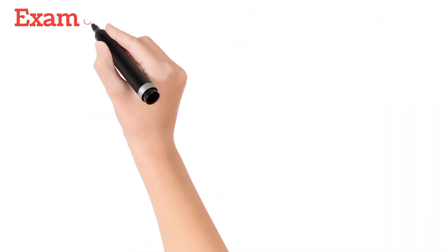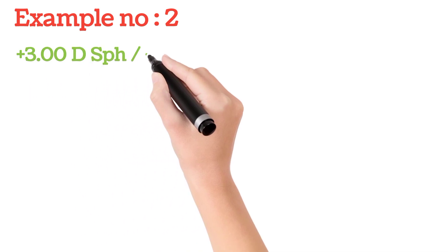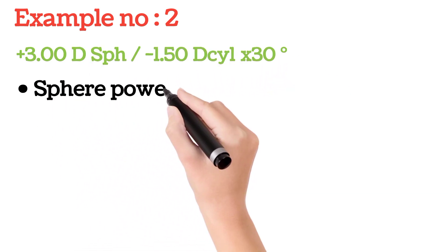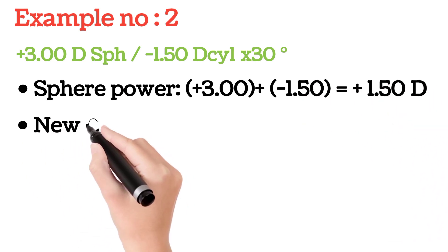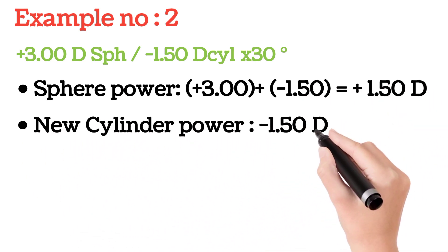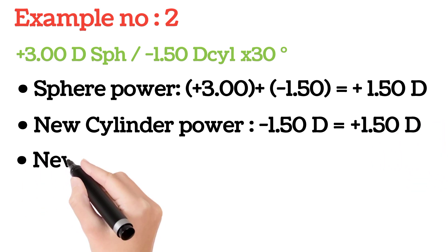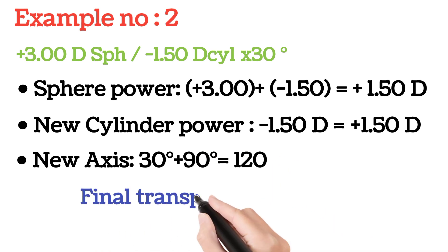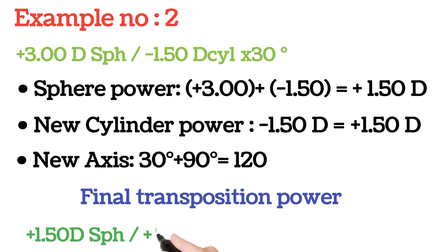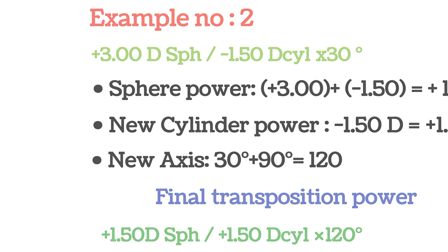Second example: +3.00 diopters spherical, -1.50 diopters cylindrical at 30 degrees. Applying rule one, add sphere to cylindrical: 3.00 + (-1.50) = 1.50 diopters — the new spherical power. Applying rule two, change the sign: new cylindrical is +1.50 diopters. Applying rule three, the axis is 30 degrees (less than 90), so add 90: new axis is 120 degrees. The final transposition is +1.50 diopters spherical, +1.50 diopters cylindrical at 120 degrees.